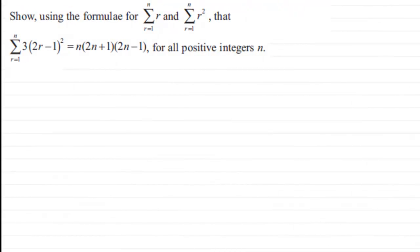Hi. Now in this question, we've got to show that using the formula for sigma r and sigma r squared, both going from r equals 1 to n, we've got to show that sigma r going from 1 to n of 3 times 2r minus 1 all squared is equal to n times 2n plus 1 times 2n minus 1 for all positive integers n.